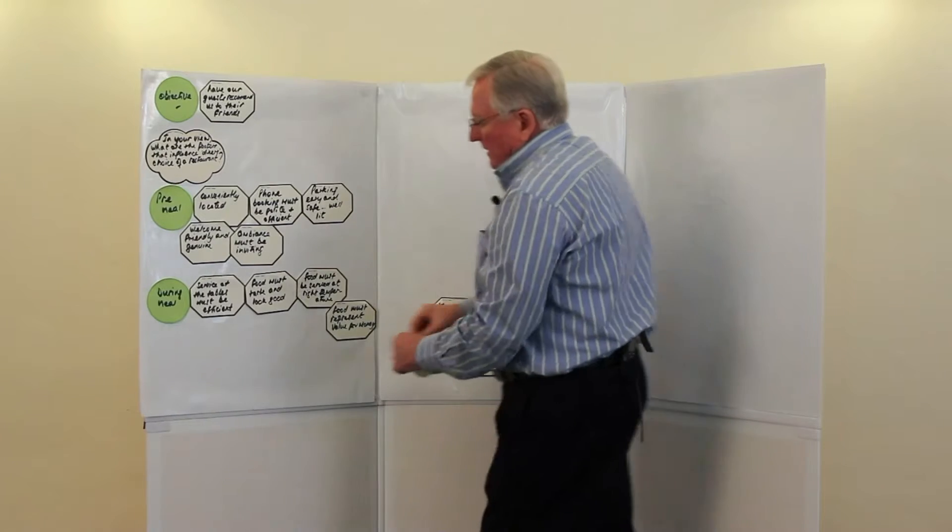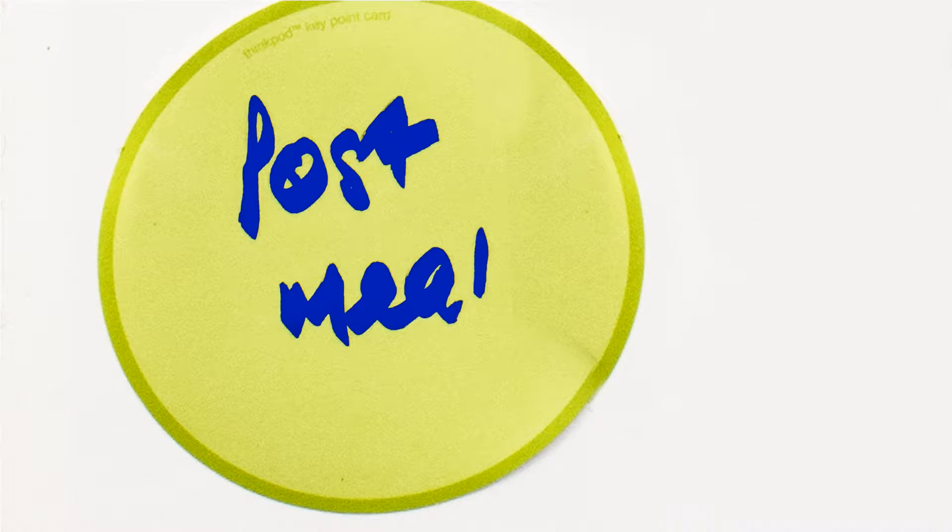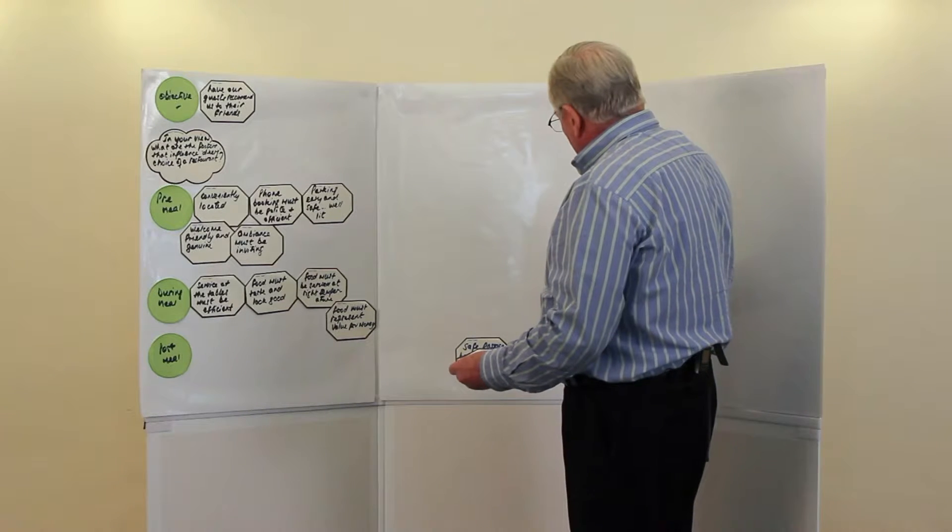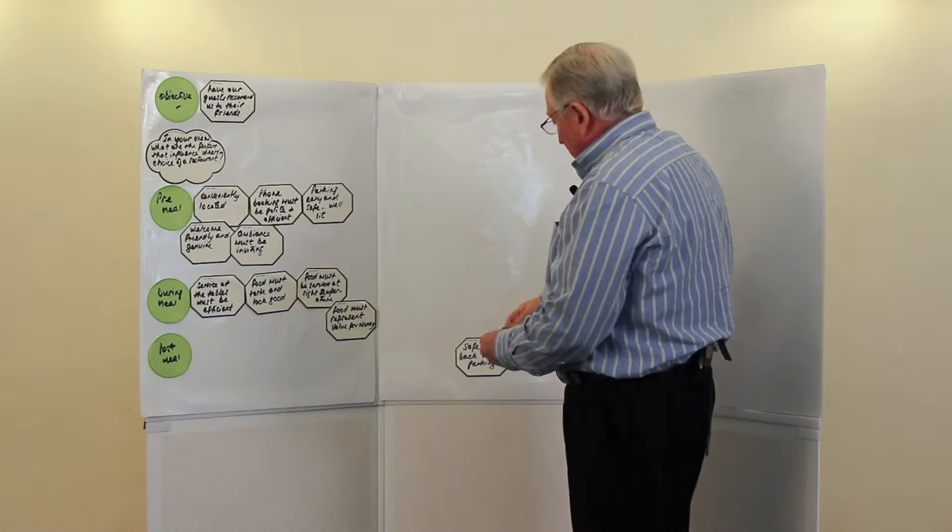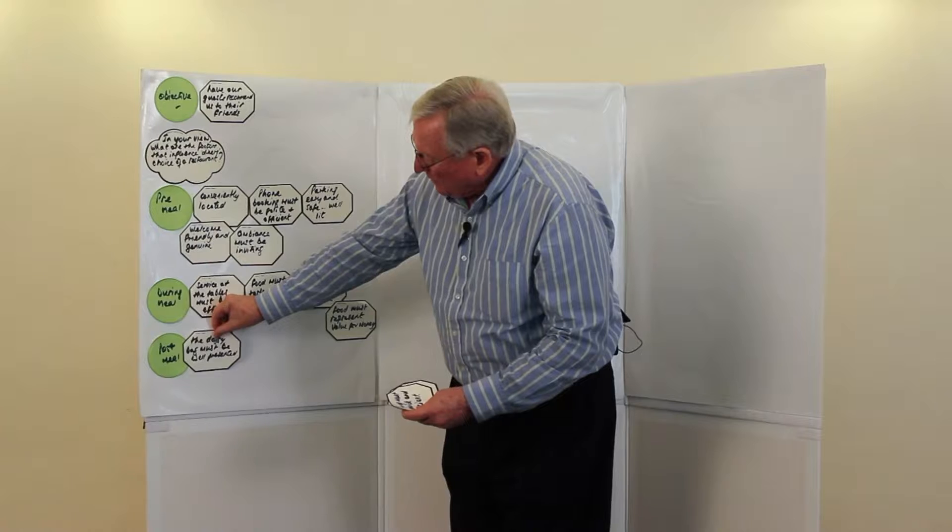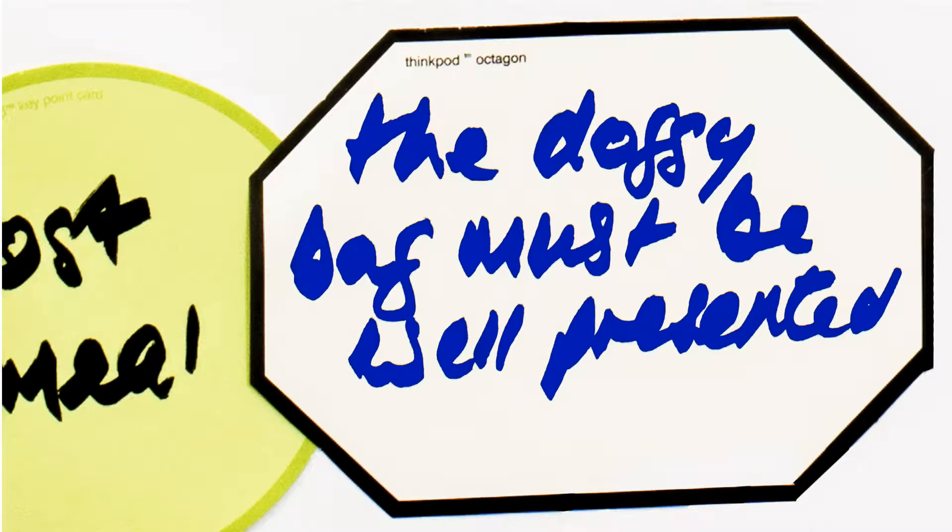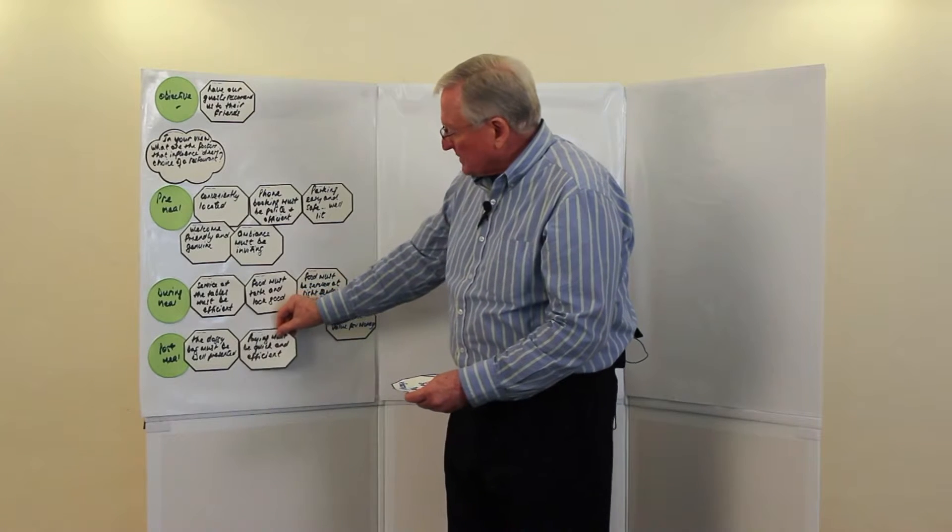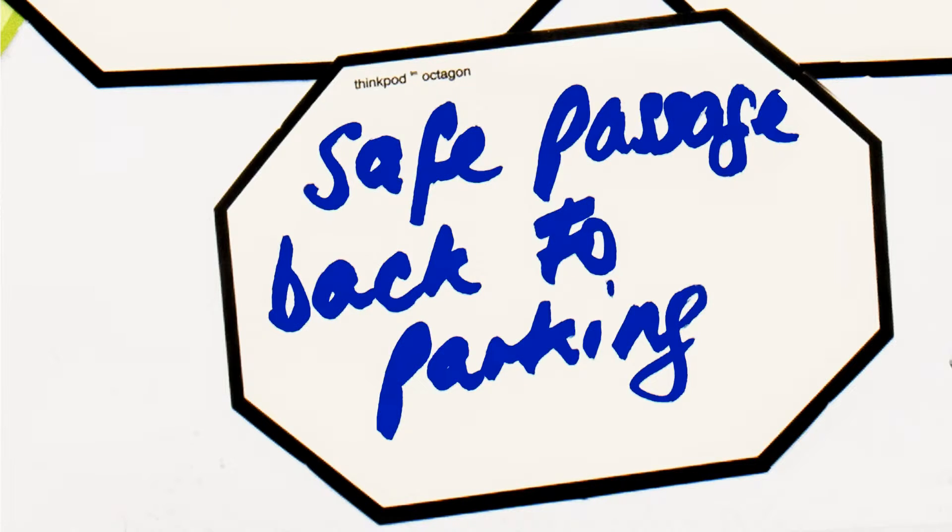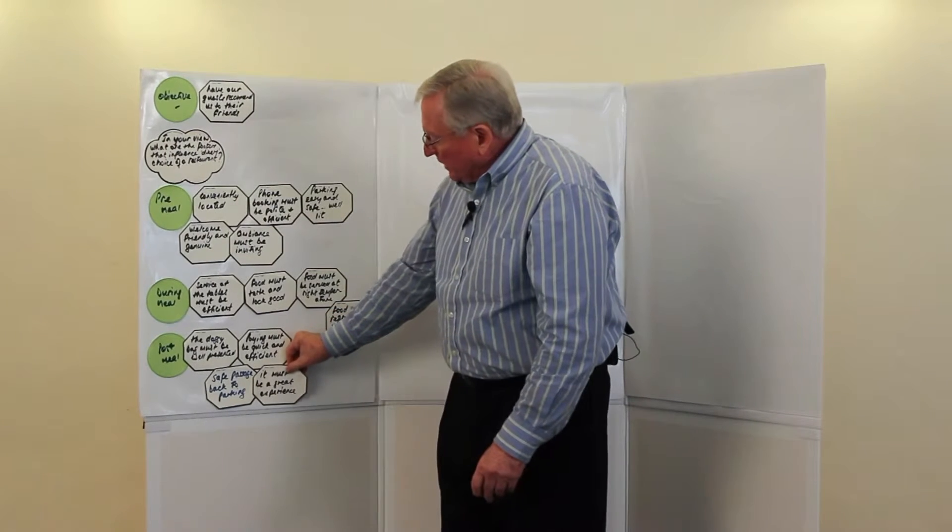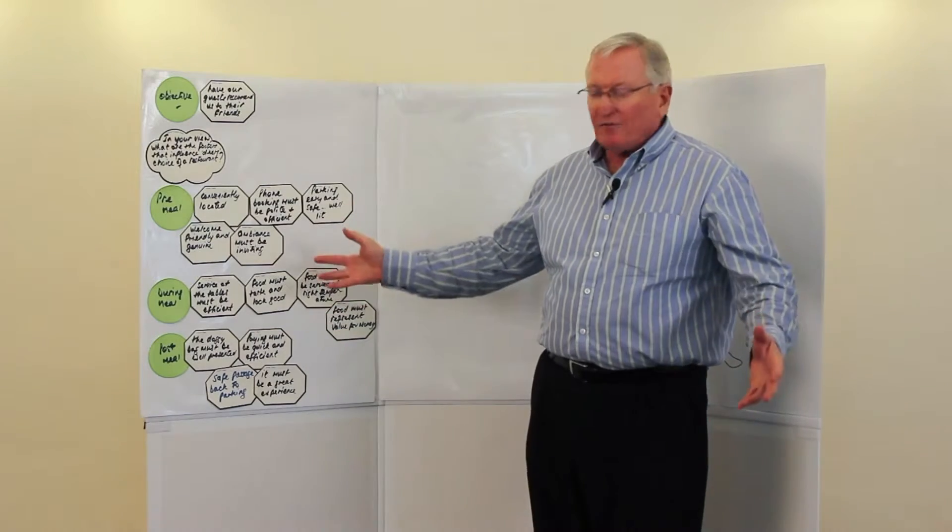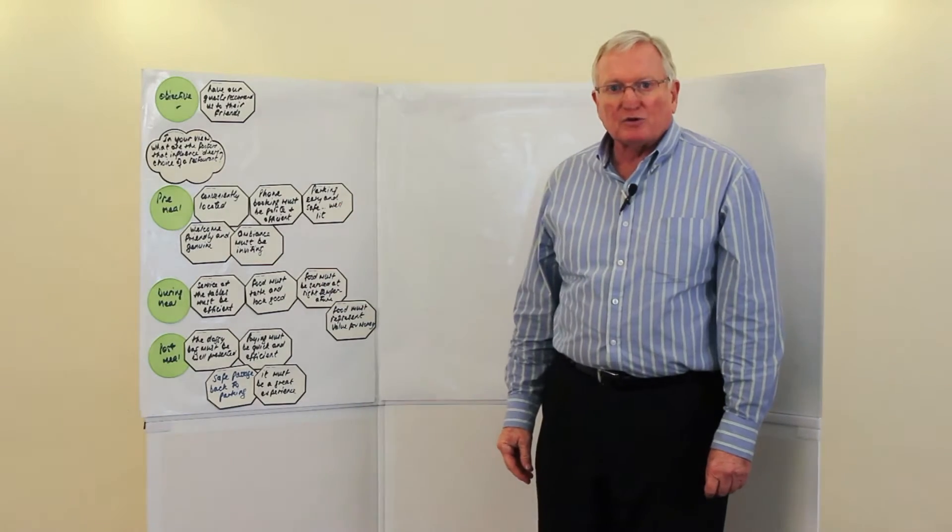And then finally, now that I've finished my meal and I asked for a doggy bag, was the doggy bag looking good? Was it easy and quick to pay? Was it a safe passage back to the parking? So what we're saying here is the doggy bag was well presented. The paying was quick and easy. It was a safe passage back to the parking. And overall, that was a great experience. So I've now got myself effectively the elements that make up a good restaurant.